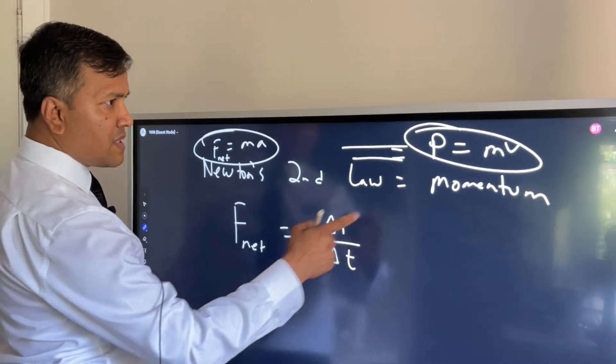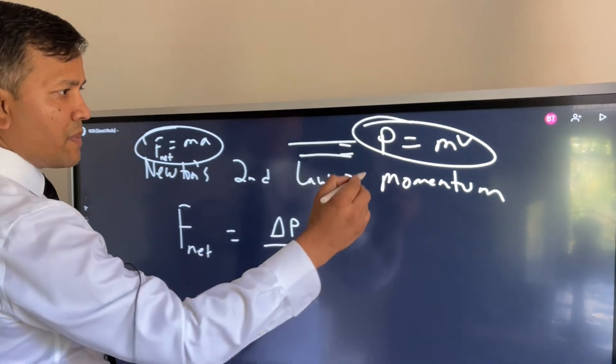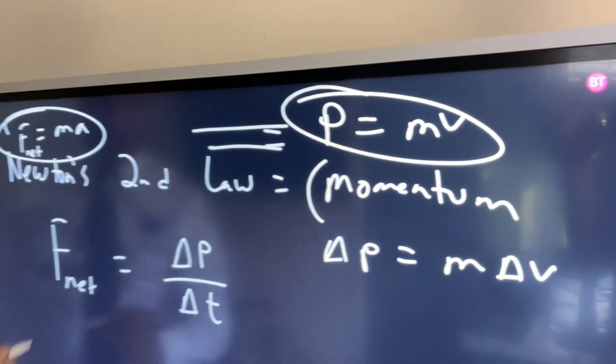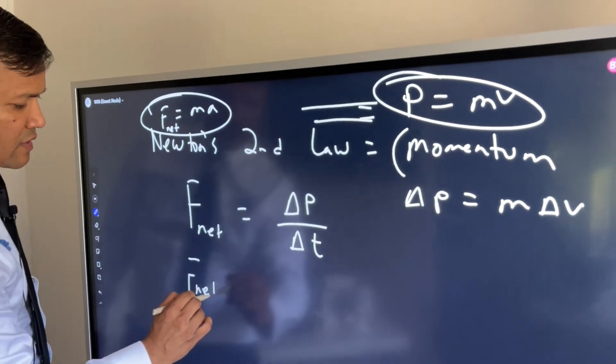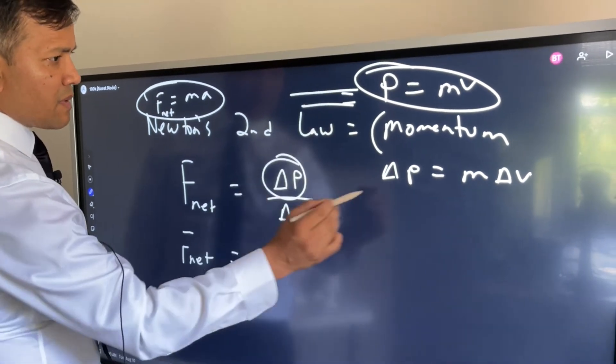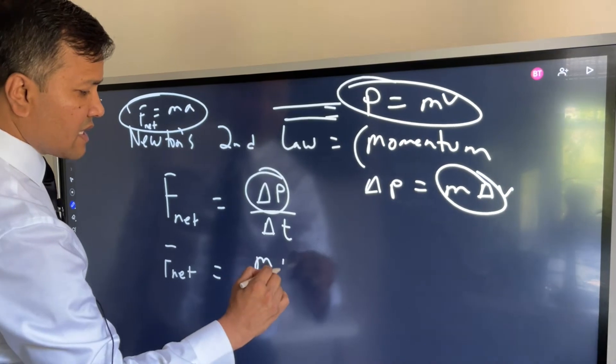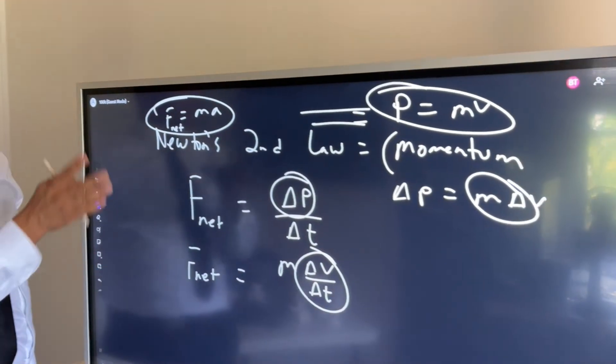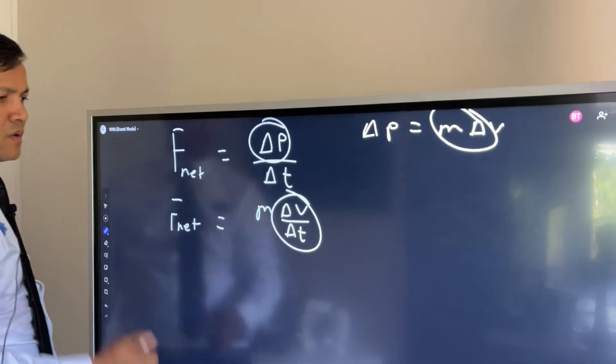Delta p is equal to... So p=mv, so what is Δp? Δp = mΔv. So let's see how far we can go with this. We're going to replace this one by mΔv/Δt.